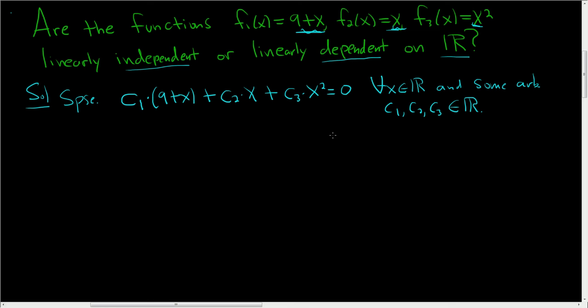One of two things will happen at this point. All of these c sub i's, c sub 1, c sub 2, c sub 3, will be equal to 0. So all c sub i are equal to 0.